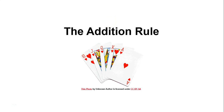In this video we are going to discuss the addition rule. What the addition rule basically is: you're looking at multiple outcomes as being the favorable outcome in an experiment.